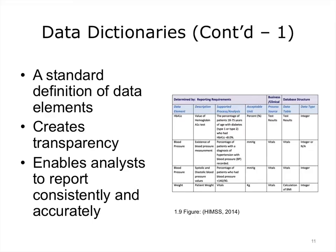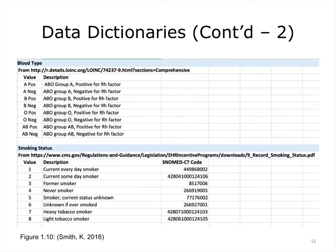Documenting the source of the data creates transparency to the organization and enables analysts to report consistently and accurately. If a single data element has multiple sources — e.g., both a billed CPT code and a service documented in the EMR — a data dictionary ensures that all elements being measured are considered correctly. This documentation process also helps to discover if the necessary data elements are even available. Here is an example data dictionary for a few meaningful use measures, and here is part of the data dictionary for the smoking versus weight example, showing what each number under smoking status means — for example, a 1 indicates that this patient currently smokes every day, and each value is linked to a specific SNOMED CPT code.